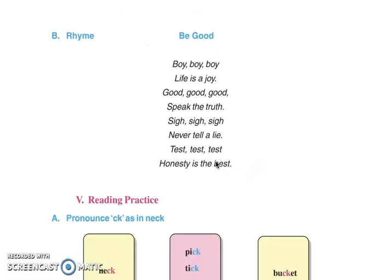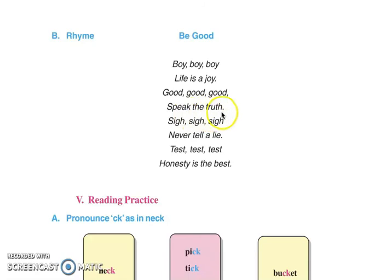Rhyme — kavita: Be good, boy! Life is a joy — zindagi ek mazedaar khed hai. Good, good, good — changa, changa, changa. Speak the truth — humesha sach bolo. Never tell a lie — kadhe jhooth na bolo. Honesty is the best — imaandaari sabto uttam hai.